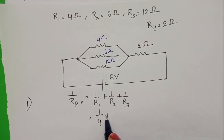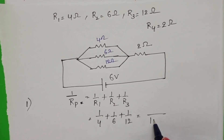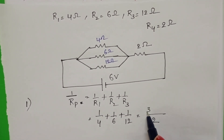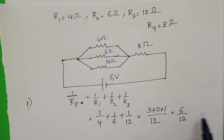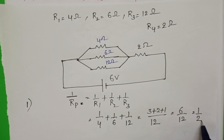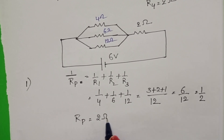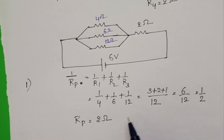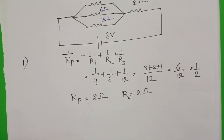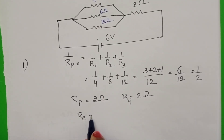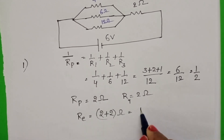1 by Rp equals 1 by 4 plus 1 by 6 plus 1 by 12. LCM is 12 — that gives 3 plus 2 plus 1 over 12, which is 6 by 12, equals 1 by 2. So the equivalent resistance of the parallel combination is 2 ohm. Adding the series resistor of 2 ohm, the total equivalent resistance is 2 plus 2 equals 4 ohm.